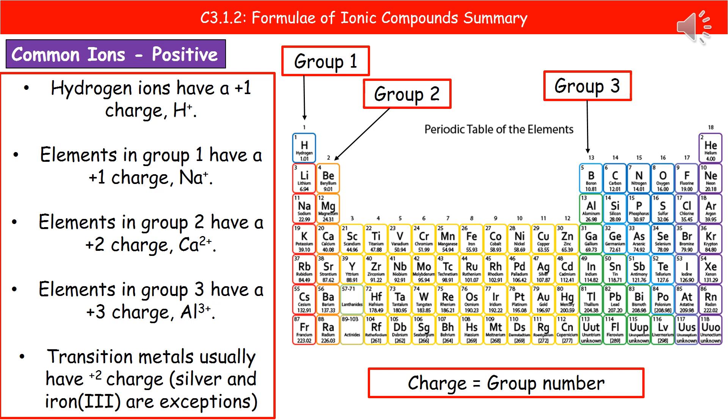If we consider group two, they have a plus two charge. Group three has a plus three charge. What that tells us is that whatever the group number is—the column—that charge will be the same as the group number. So it's always positive on the left side of the periodic table, and the number of positive charges is the same as the group number.